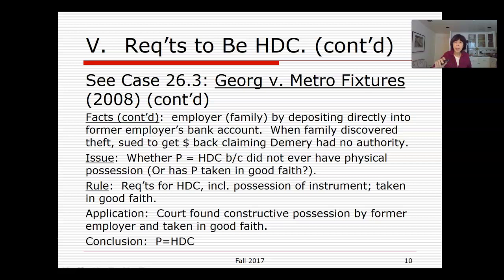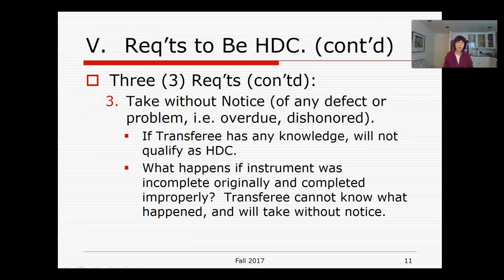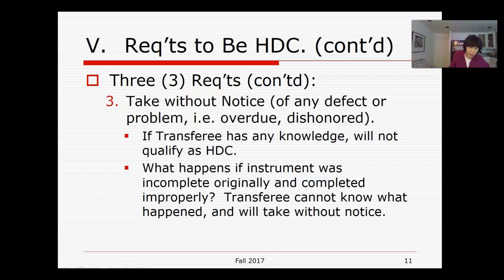The third element is that the instrument must be taken without notice of any problem or defect. The transferee cannot know that the instrument is overdue or has been dishonored by either the maker or the drawer. If the instrument was originally incomplete — for example, the payee's name or dollar amount was missing — but was later completed, a transferee who cannot know of that issue will still take without notice.